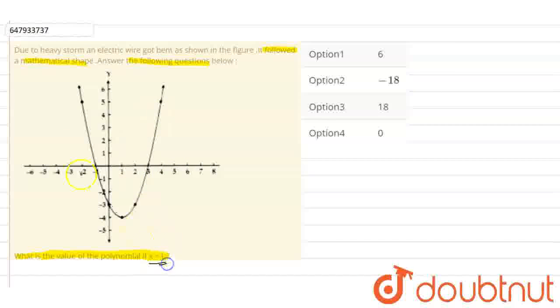Now, the question asks for the value at x = -1. At minus 1 on the x-axis, we have a value of zero.